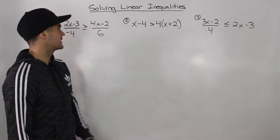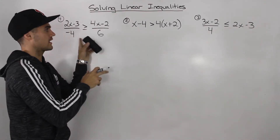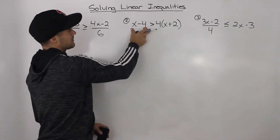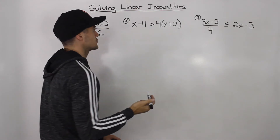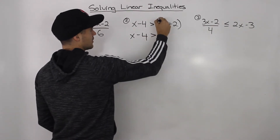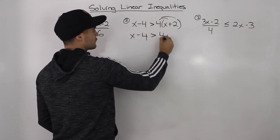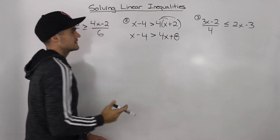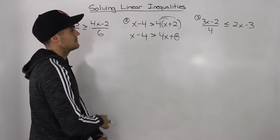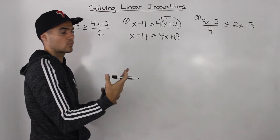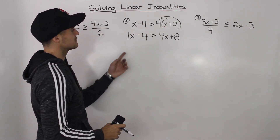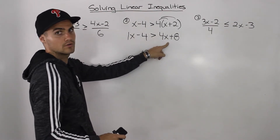Moving on to the second question — I erased that first question and took the fourth one and drew it up here, I'm going to need more room on the whiteboard. So x minus 4 is greater than 4 bracket x plus 2. You just treat that inequality sign as an equal sign. Distribute the 4 on the right side, so we get 4x plus 8. Then bring all of the variables to one side, bring all the numbers to the other. You want to bring the variables over to the side where they'll simplify to a positive value.